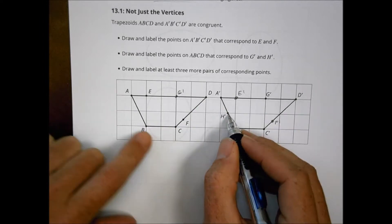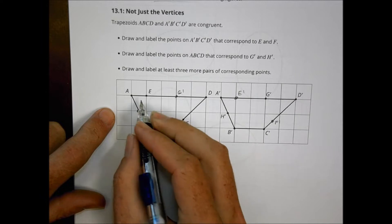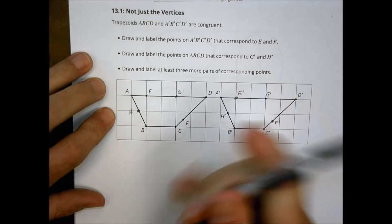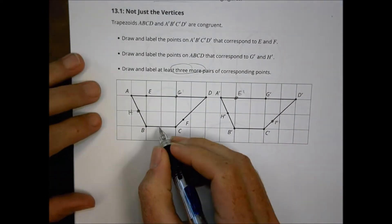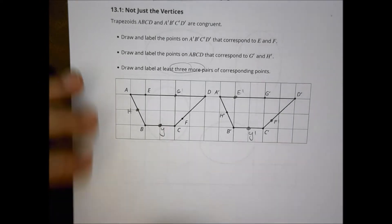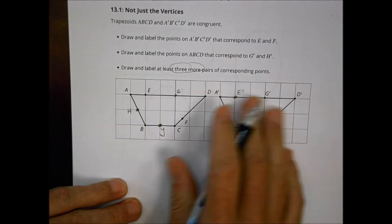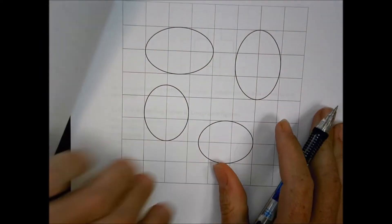And then H' is in the middle, so it's between A and B, so we'd have H right here. Then I wanted you to find at least three more pairs of corresponding points, and you could pick any pair you want. You could put a pair right there and call it Y, and one right there and call it Y'. So there's lots of different points along this quadrilateral that you could label with the regular or prime, not just the vertices there.